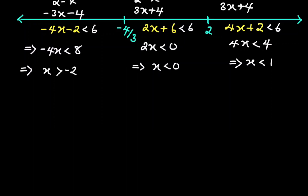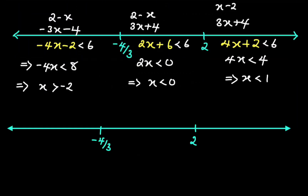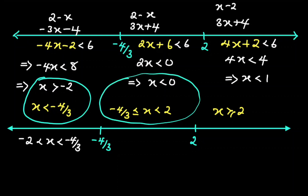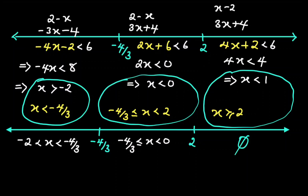Now we draw another number line to find the intersections clearly. In the first region, x is less than negative 4 over 3, and our inequality gives x greater than negative 2. The intersection is negative 2 less than x less than negative 4 over 3. In the second region, negative 4 over 3 is less than or equal to x less than 2, and our inequality gives x less than 0. The intersection is negative 4 over 3 less than or equal to x less than 0. In the third region, x is greater than or equal to 2, and our inequality gives x less than 1 — the intersection is an empty set.